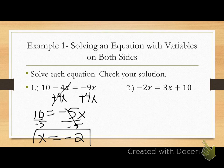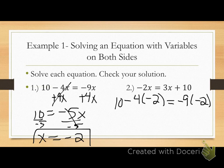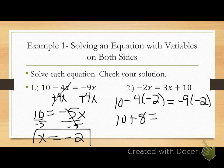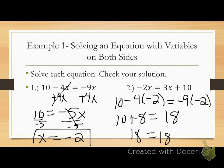It tells me to check my solution, so I'm plugging negative 2 in for x in the original problem. Left side: 10 minus 4 times negative 2. By order of operations, multiply first: negative 4 times negative 2 equals positive 8. Right side: negative 9 times negative 2 equals positive 18. Left side: 10 plus 8 equals 18. True statement — negative 2 checks out as the correct answer.